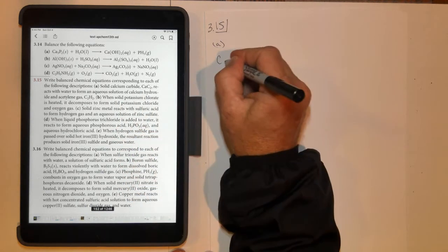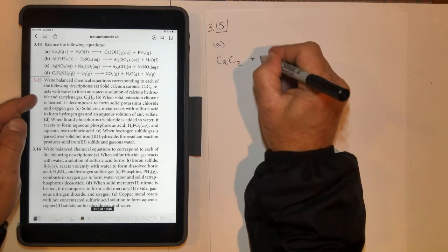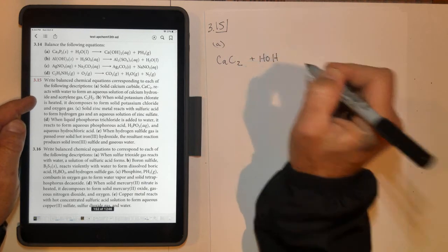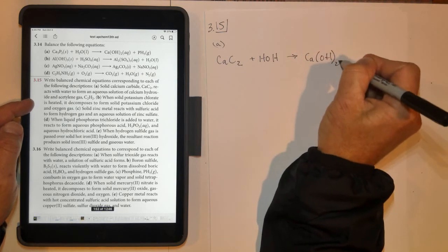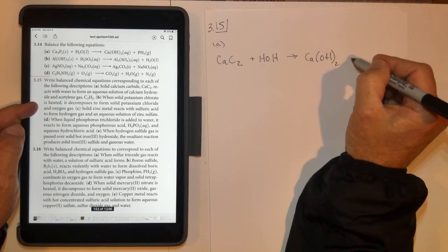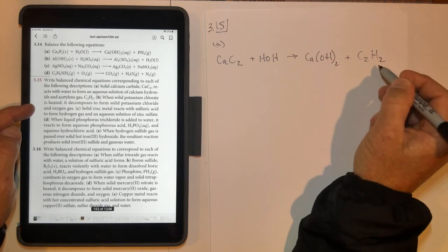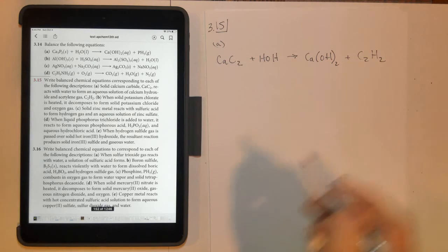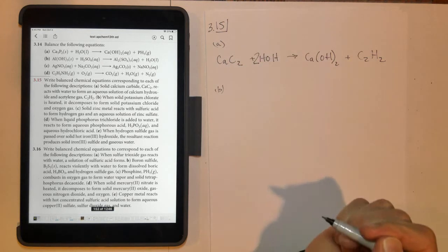Solid calcium carbide reacts with water to form an aqueous solution of calcium hydroxide. Don't forget the 2 down here, because calcium is plus 2, and acetylene gas. Acetylene gas is C2H2. I'm going to need a 2 in front of the water, and it's balanced.